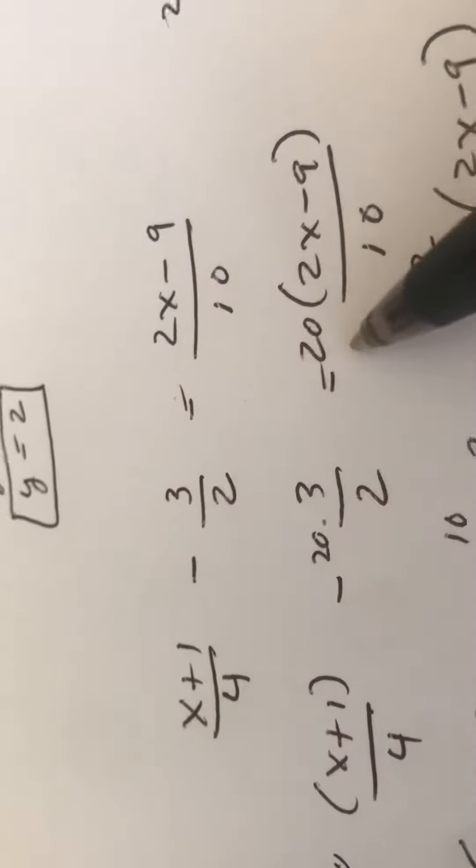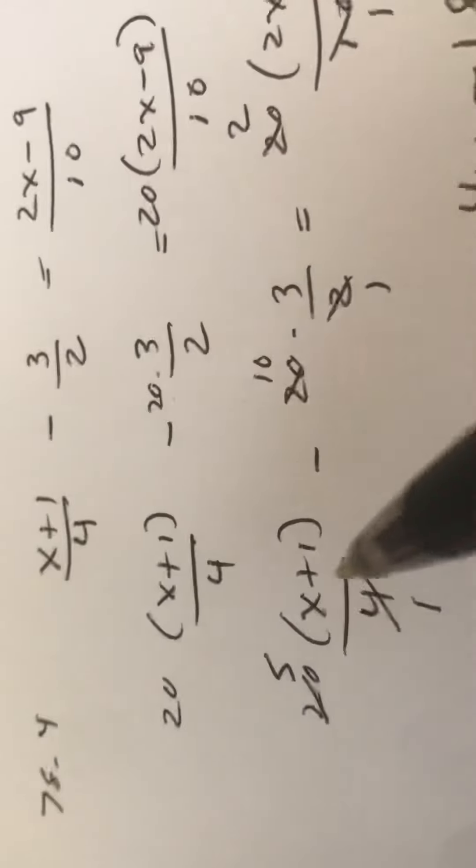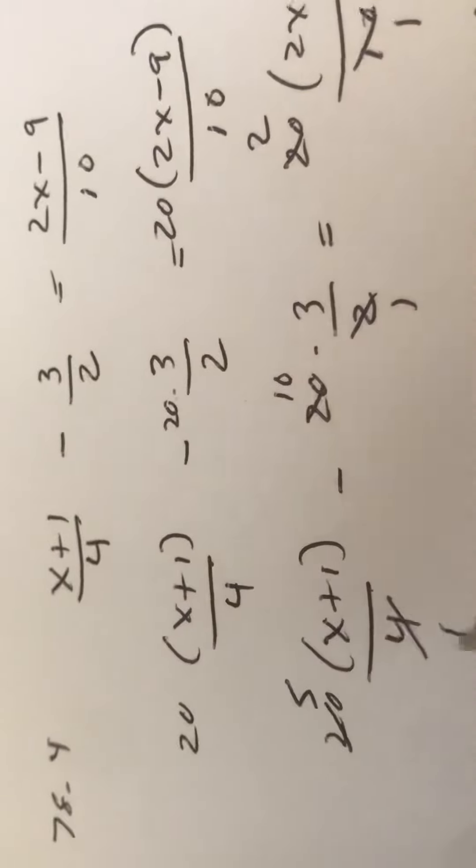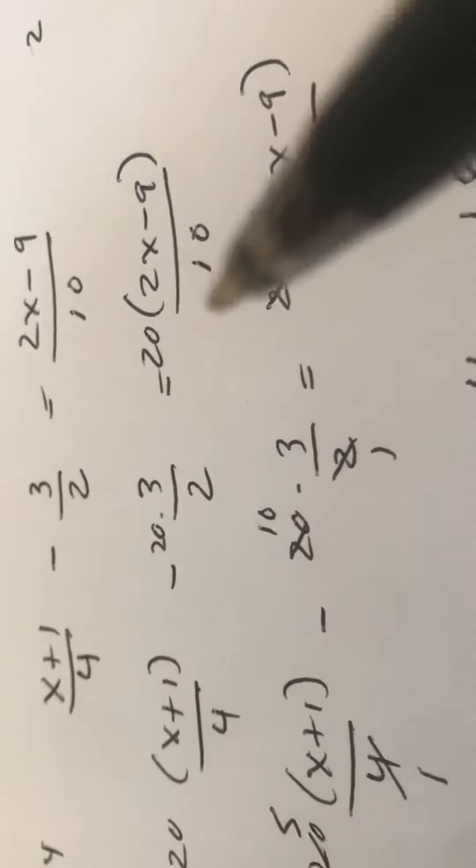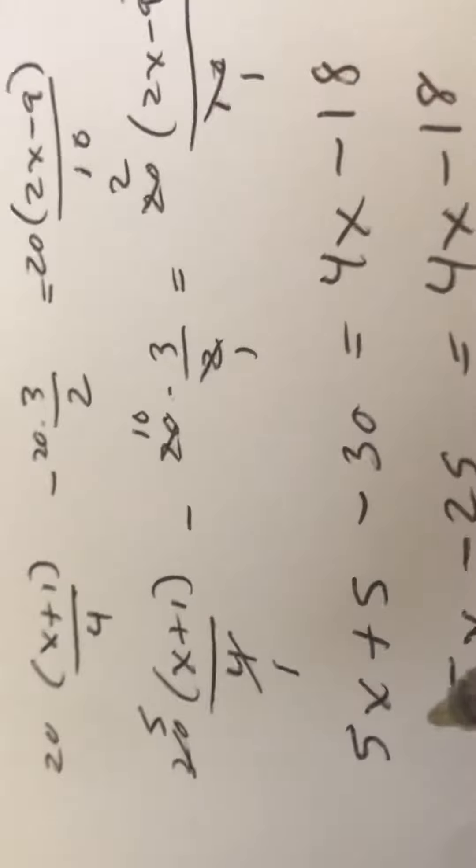So I multiply each term by 20. Then I cancel. 4 goes in 5 times, goes in once. 4 goes in 5, 2 goes in once, goes in 10. 10 goes in once, goes in 2.